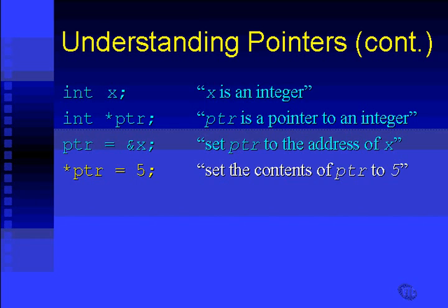Well, it would set ptr to point to whatever is happening to be sitting at memory address 5. Now, there's probably nothing sitting at memory address 5, so that's probably an illegal thing to do. But 5 would be interpreted as a memory address. However, star ptr means the thing that ptr points to becomes equal to 5.